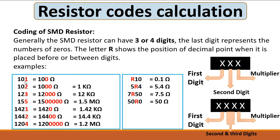For example, if you find '101' on a resistor, the last digit '1' is the multiplier — one zero — so this means 100 ohms. '102' means two zeros. '123' means we take the first two digits and add three zeros, so 123 equals 12,000 ohms, which equals 12 kilo-ohms.